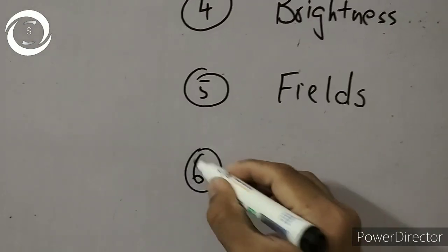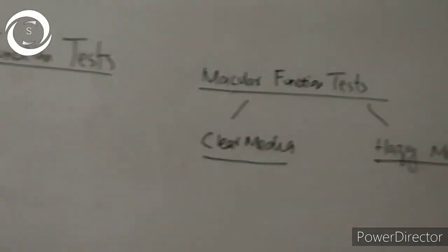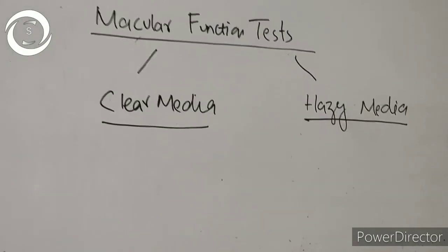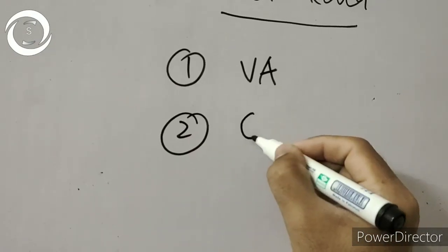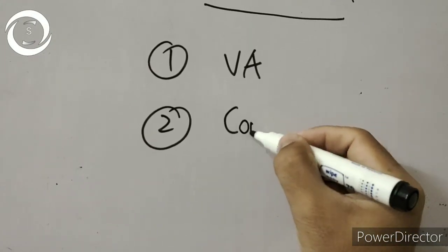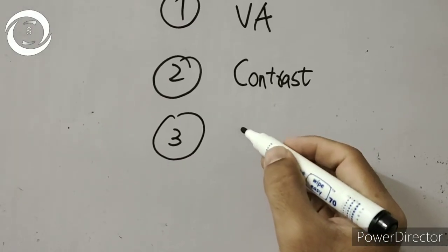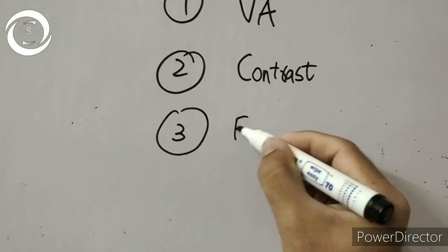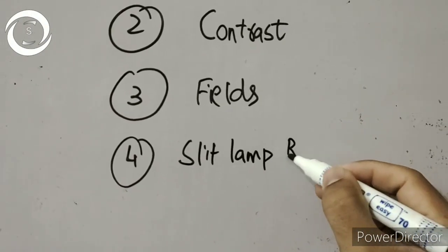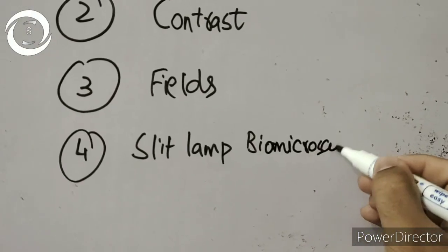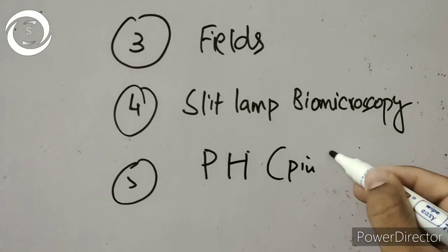Macular functions are divided into clear media and hazy media tests. The clear media macular functions include: vision, which is more reduced in macular diseases; contrast, which can also be decreased in macular pathologies; visual fields, where you can get central scotomas; slit lamp biomicroscopy with indirect lenses to assess the macula; and pinhole, which is an important macular function test. In macular pathologies, vision will be more reduced with a pinhole, whereas in a normal patient, pinhole increases vision.